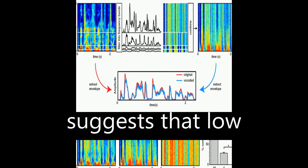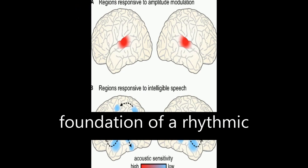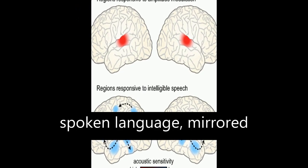Overall, the evidence suggests that low-frequency oscillations in the acoustic speech signal form the foundation of a rhythmic hierarchy supporting spoken language.